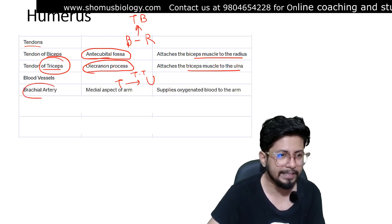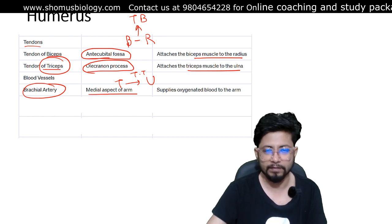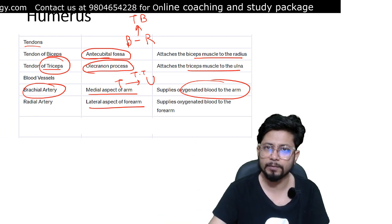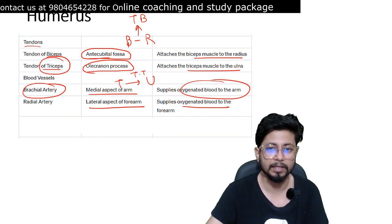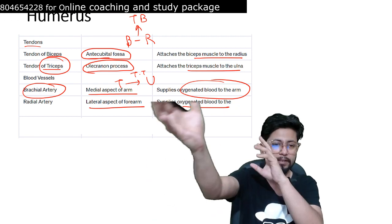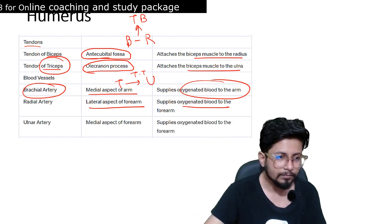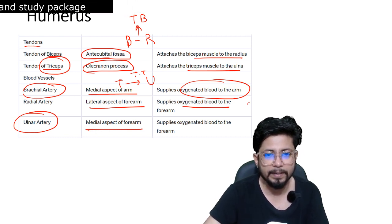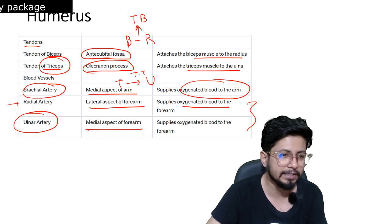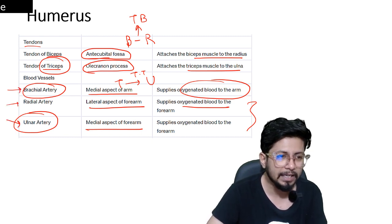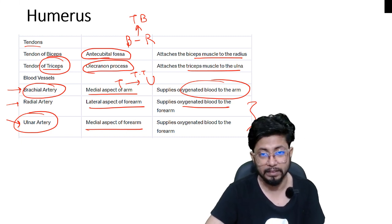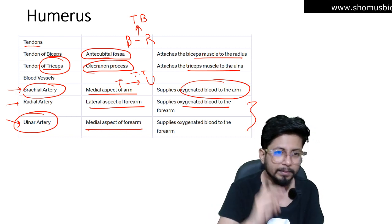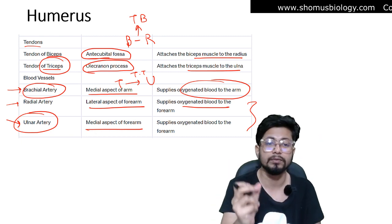Regarding blood vessels, the brachial artery is on the medial aspect of the arm and supplies oxygenated blood to the arm overall. The radial artery is on the lateral aspect and supplies oxygenated blood to the forearm. The ulnar artery is on the medial aspect and supplies oxygenated blood to the forearm as well. Remember: the brachial artery and ulnar artery are both on the medial aspect, but the brachial artery supplies the arm overall while the ulnar artery specifically supplies the forearm.